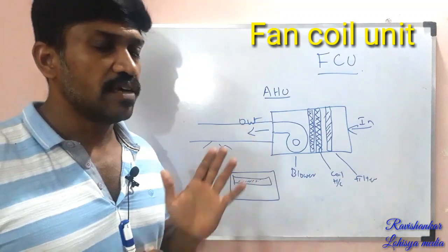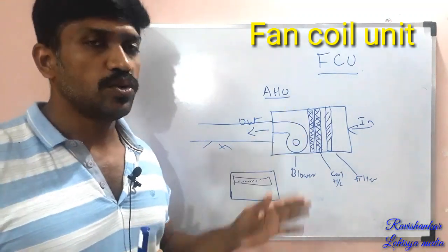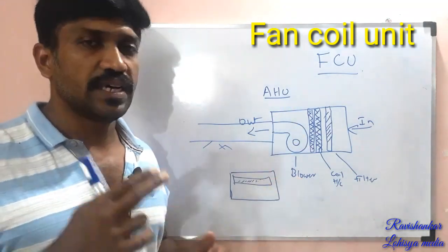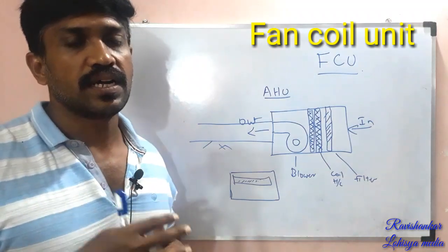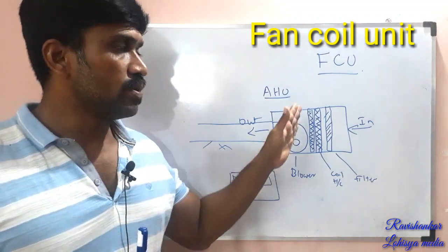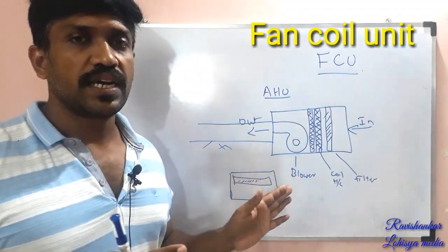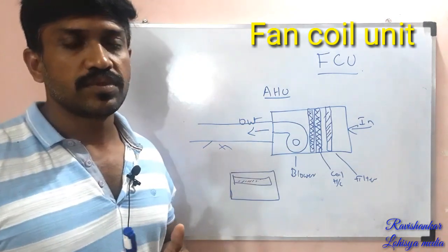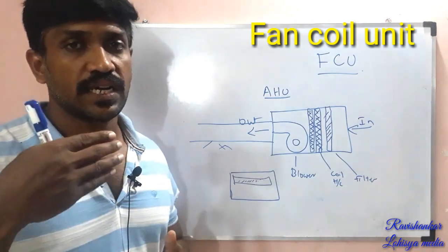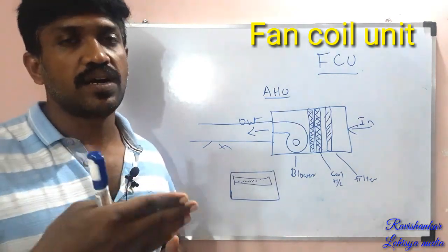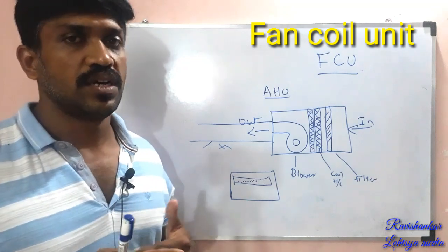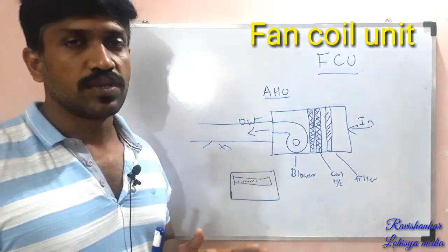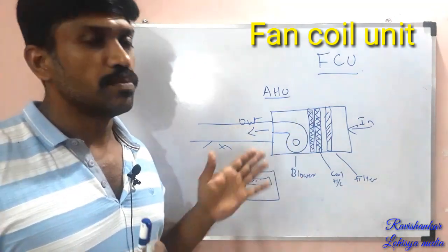As for FCU, you can use 2 pipes or 4 pipes. If you have two pipes, you use chilled water in and out. If you use 4 pipes, you can use both chilled water in-out and additional circuits. FCU includes a filter unit and a blower.